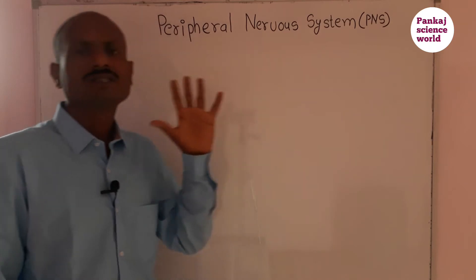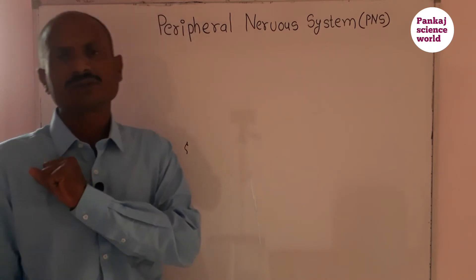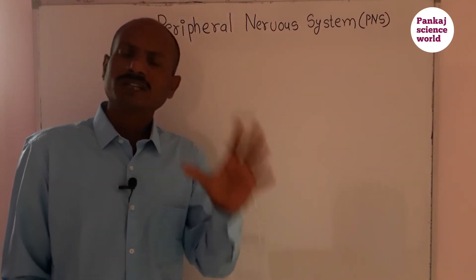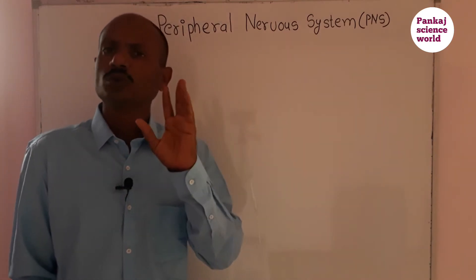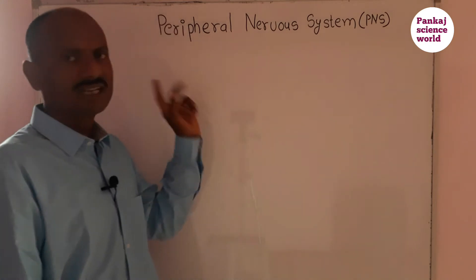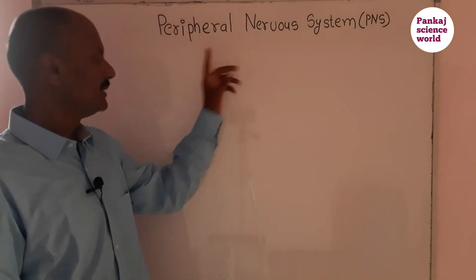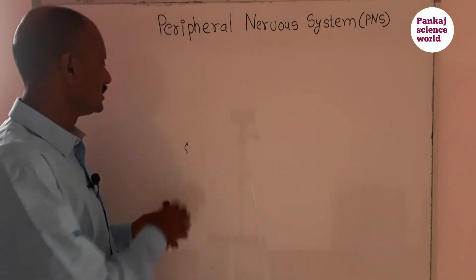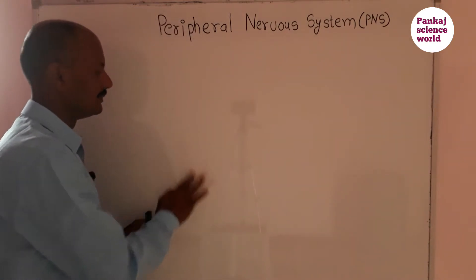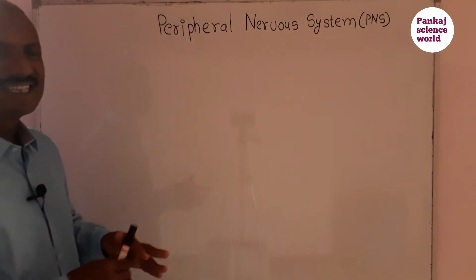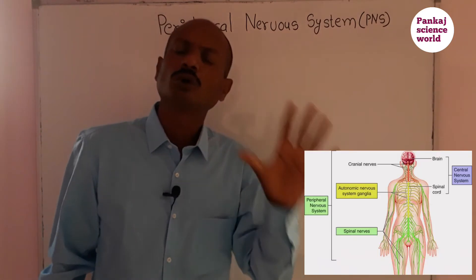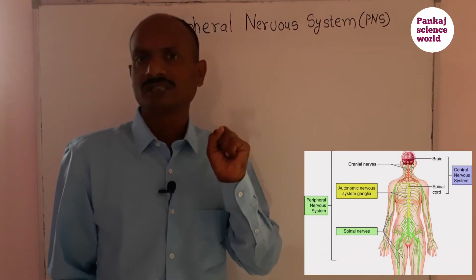The human nervous system has three aspects: the central nervous system, the peripheral nervous system, and the autonomous nervous system. In today's video, we will be looking at the peripheral nervous system and the autonomous nervous system.